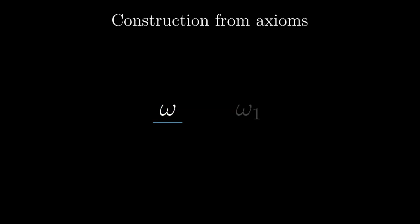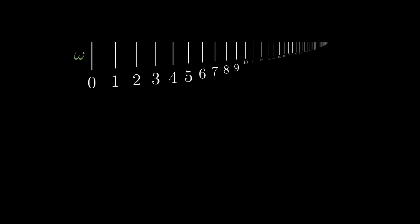Now let's revisit the construction of the ordinal omega 1 from chapter 7, as we didn't have the axioms in the appropriate chapter. We start with omega, the set of all the natural numbers we have just constructed, and consider the Cartesian product omega times omega.